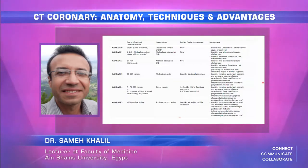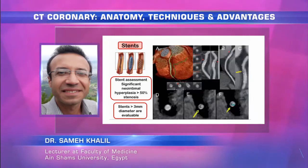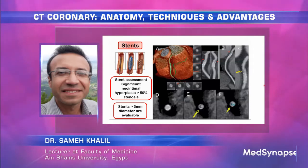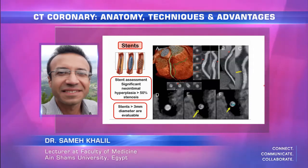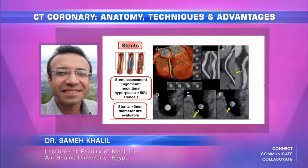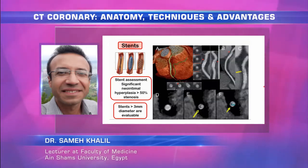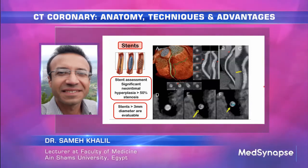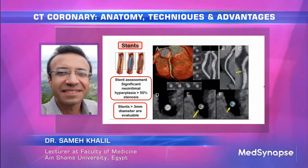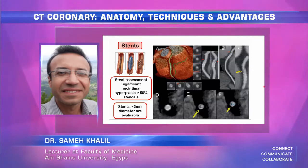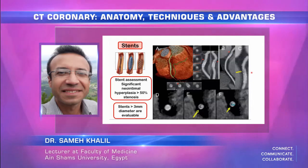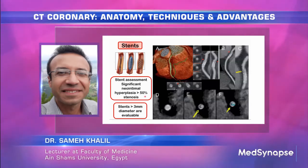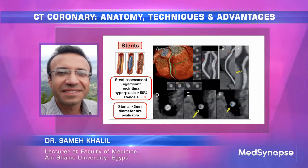We have a common classification language called the CAD-RADS system. For stent assessment, we have a wide spectrum including metal stents, drug-eluting stents, and bioabsorbable stents. In a patient with a stent, we do not assess calcium score for risk — the patient already has established coronary disease. If there is plaque material inside the stent causing more than 50% narrowing, we have significant stent restenosis.